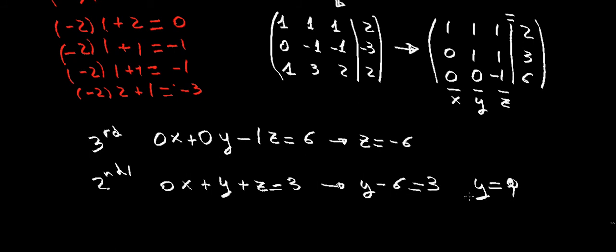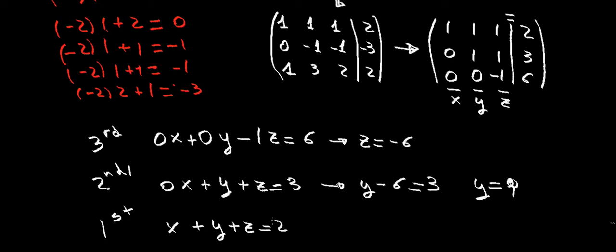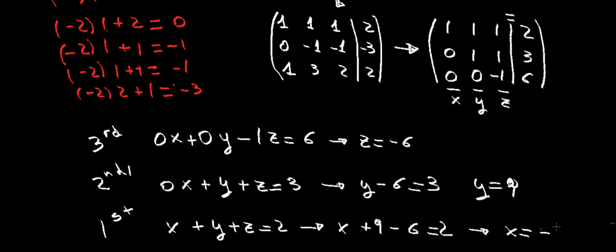Now we know z and y, so we look at the top row — row 1. The equation there says x plus y plus z equals 2. We know z is minus 6 and y is 9, so the equation becomes x plus 9 minus 6 equals 2. Solving for x gives us our final answer.